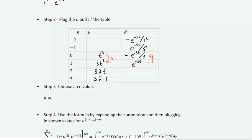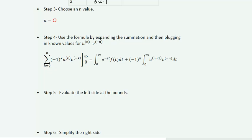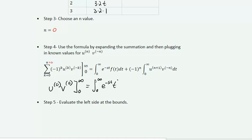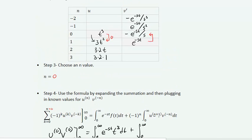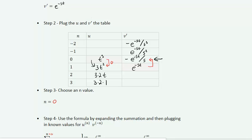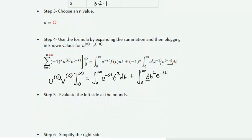If n=0, we fill the formula out with k from 0 to 0. We get u to the 0th order times v to the 0th order, integrated from 0 to infinity, equals the integral from 0 to infinity of e^(-st)·t³ dt, plus the integral from 0 to infinity of u to the 1st order (which is 3t²) times v to the negative 0th order (which is -e^(-st)/s) dt.